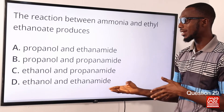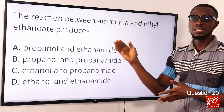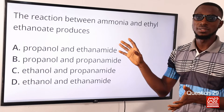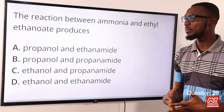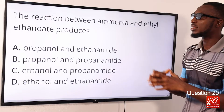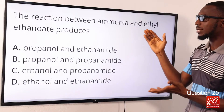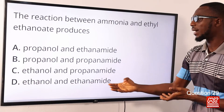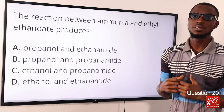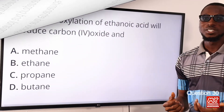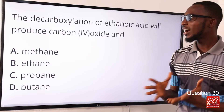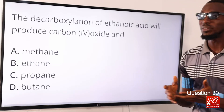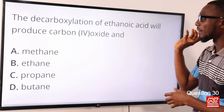Question 29: The reaction between ammonia and ethyl ethanoate produces what? It produces ethanol and ethanamide. When you examine the chemical properties of ethyl ethanoate, you see the reaction with ammonia, and what is produced are ethanol and ethanamide. Option D is the correct option.